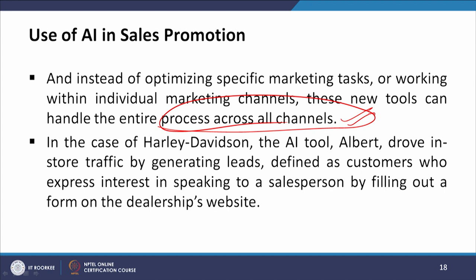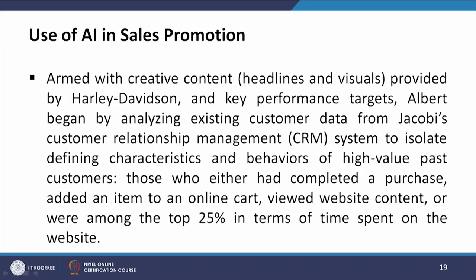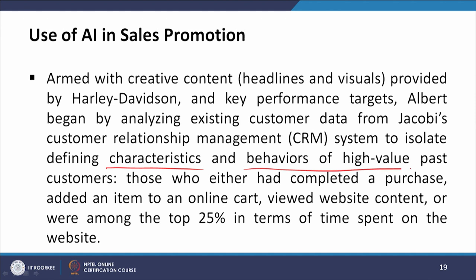In the case of Harley-Davidson, the AI tool Albert drove in-store traffic by generating leads, defined as customers who expressed interest in speaking to a salesperson by filling out a form on the dealership website. Armed with creative content, headlines, and visuals provided by Harley-Davidson and key performance targets, Albert began by analyzing existing customer data from Jacobi's CRM system to isolate defining characteristics and behaviors of high-value past customers — those who had completed a purchase, added an item to an online cart, viewed website content, or were among the top 25 percent in time spent on the website. This gave Jacobi an entirely new set of key performance indicators.